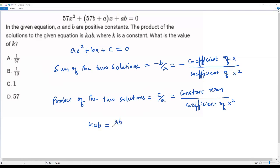So let's write ab over here, and it has to be divided by a, which means the coefficient of x squared. What is the coefficient of x squared in our equation? It's 57. So we have to write 57 in the denominator.